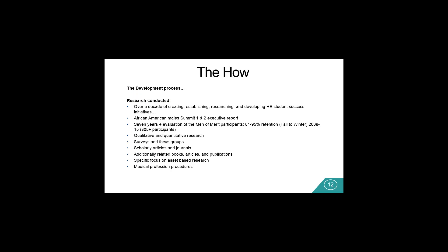Next, we'll look at the how — the missing link was developed. A decade in the making: two- and four-year institutions creating, establishing, researching, and developing higher education success initiatives, especially as it pertained to the African-American male and males of color population. From a breadth of higher education initiatives that focused primarily on their preparation, how they engaged, when they engaged, what they were more likely to respond to. Also, the African-American Male Summit executive reports we hosted, focused on assets and deficits.